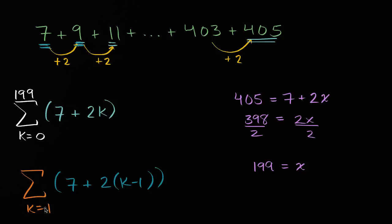And so how many total terms are we going to have here? Well, one way to think about it is I just shifted the indices up by 1. So we're going to go from k equals 1 to 200. And you can verify this. When k equals 200, this is going to be 200 - 1, which is 199. Two times 199 is 398, plus 7 is indeed 405. So when k equals 200, that is our last term here. So either way, these are legitimate ways of expressing this arithmetic series using sigma notation.